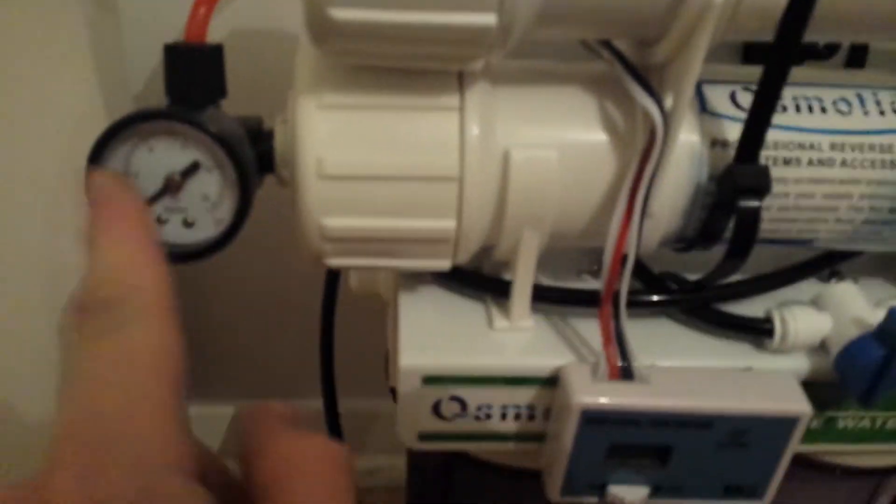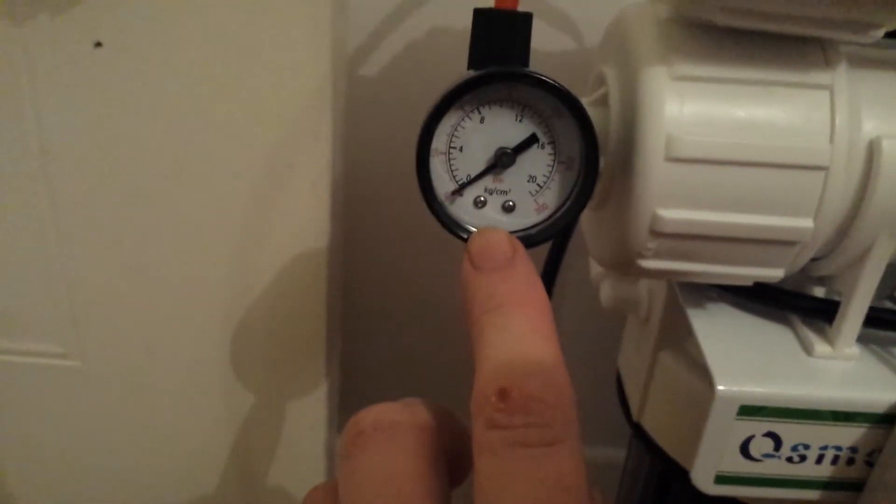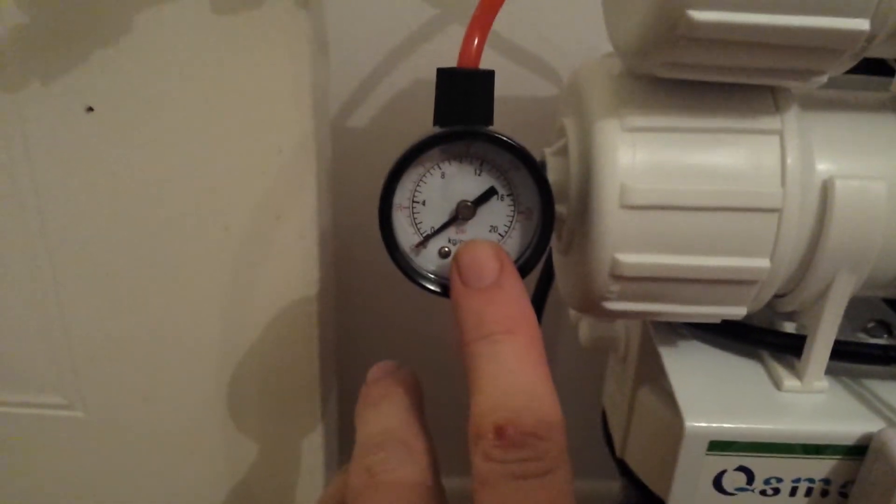It's on the outlet of the pump into the first RO unit, and then I can see what pressure I'm getting out of the other side of the pump.